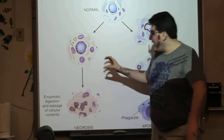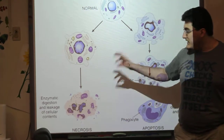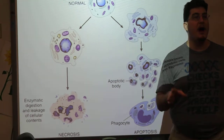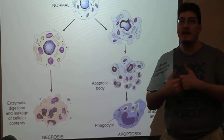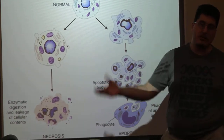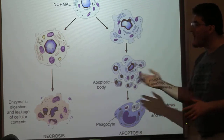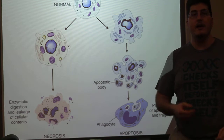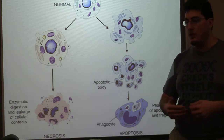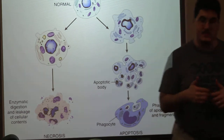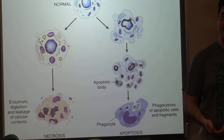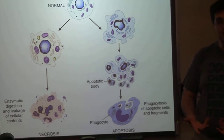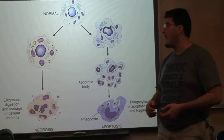Enzymatic digestion and leakage of cellular contents will occur because the cell membrane has been compromised, and the contents of the cell will leak out into the extracellular space. This is not a good thing because organelles exist to concentrate enzymes and to wall off dangerous enzymes — like the lytic enzymes in lysosomes.